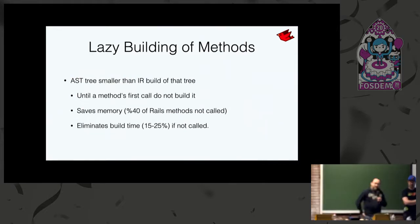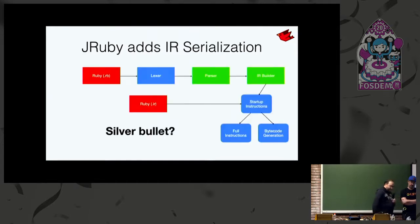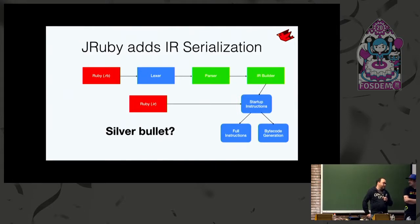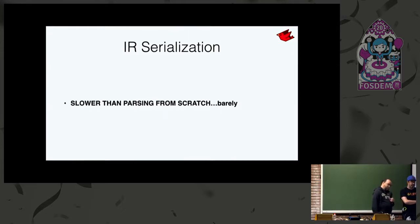We realized the AST tree in memory was smaller than our IR, so we got lazy: until the first method was called, we didn't actually build the IR itself. It was mostly a memory optimization but it did improve startup a little. Then we revisited serialization again — a Google Summer of Code project spiked this and we really hoped it would be magic, but it wasn't. The parser and compiler end up getting so hot that it makes no difference compared to serialization, and we still create all the same number of IR objects.